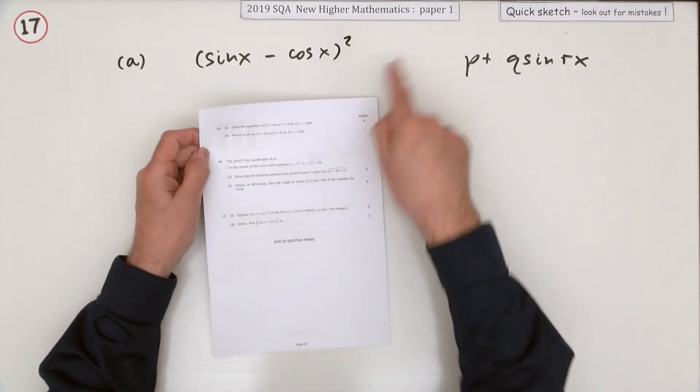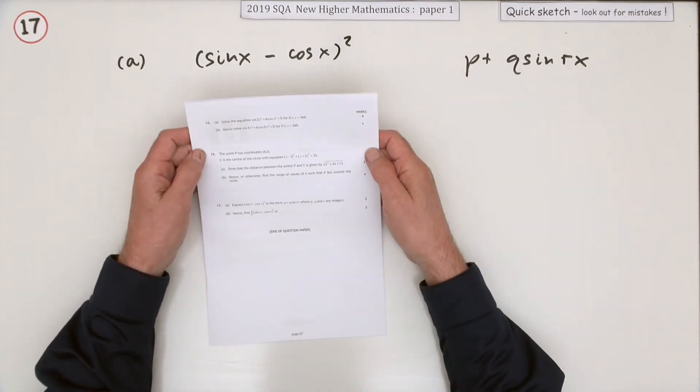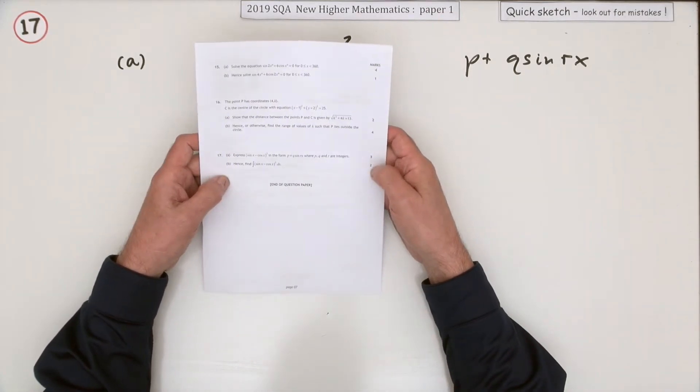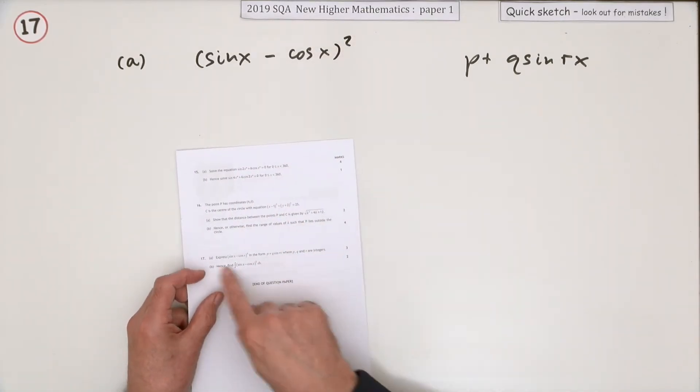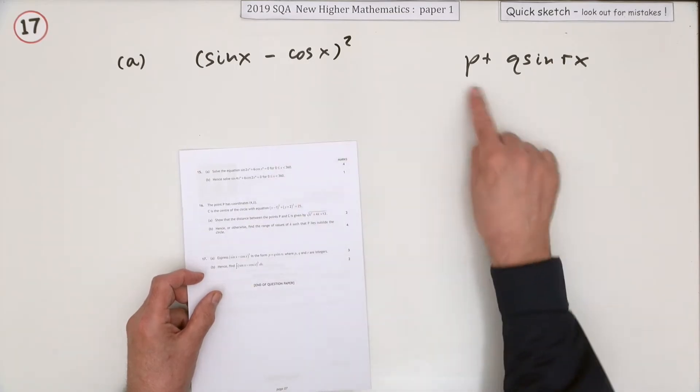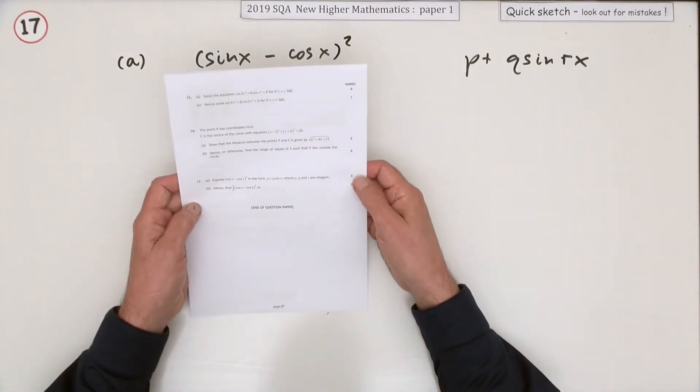Number 17, the last question in paper 1 of the 2019 Higher Maths, is worth five marks. It might look awkward with its trigonometry, integration, and identities in this strange expression, but it's actually a very short question.